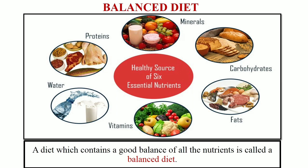our diet should have all the nutrients that our body needs in right quantities. Nutrients like carbohydrates, fats, proteins, vitamins and minerals should be present in food in right quantities — not too much of one and not too little of the other. The diet should also contain a good amount of roughage and water. Such a diet is called a balanced diet.